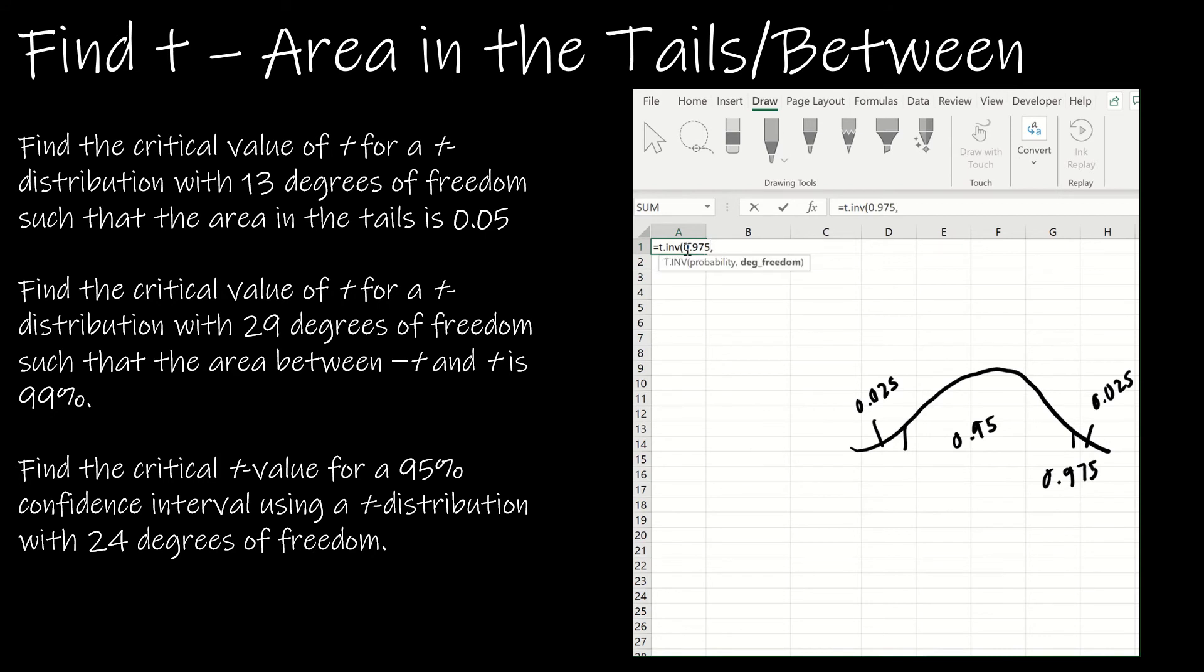One way to do this is to say equals t dot inverse of 0.975, and then the degrees of freedom is 13. So that is the correct critical value, which is just going to be the t of alpha over 2.